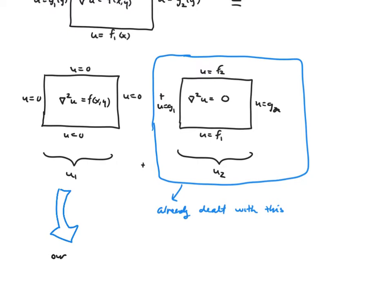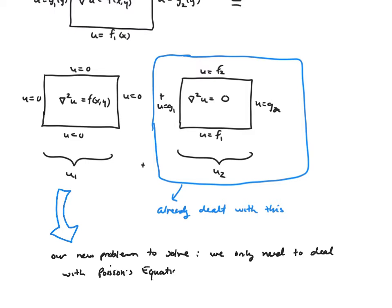This is our new problem to solve. The first point is that if I have non-homogeneous boundaries, I can deal with that separately from the non-homogeneous forcing term in the PDE. So we only need to deal with Poisson's equation with homogeneous boundaries — keeping them Dirichlet for our first exposition here.